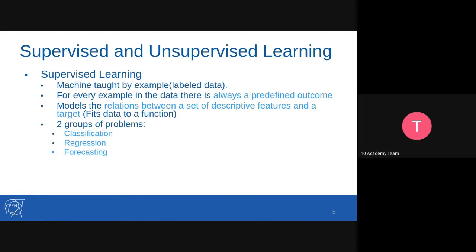For every example in the data, there is always a predefined outcome modeling the relationship between a set of descriptive features and the target. The most common types of problems in supervised learning are classification, regression, and forecasting. In classification, we try to classify data based on labeled data. The straightforward example is classifying cats and dogs — we first have labeled data containing cats and dogs with their respective labels, then the algorithm learns patterns and classifies new or unseen data based on the training set.